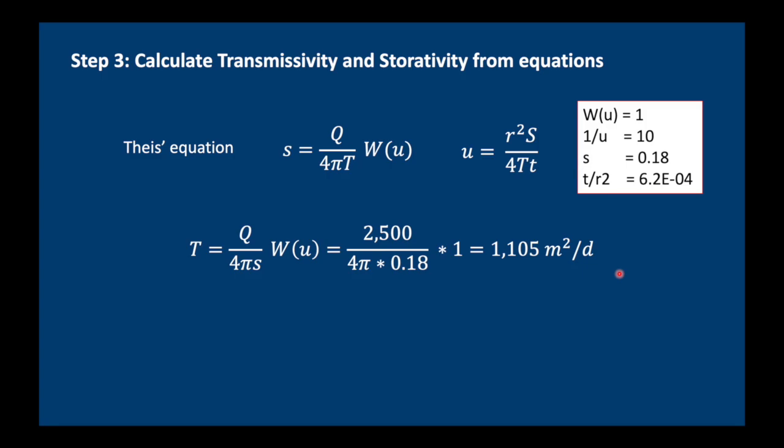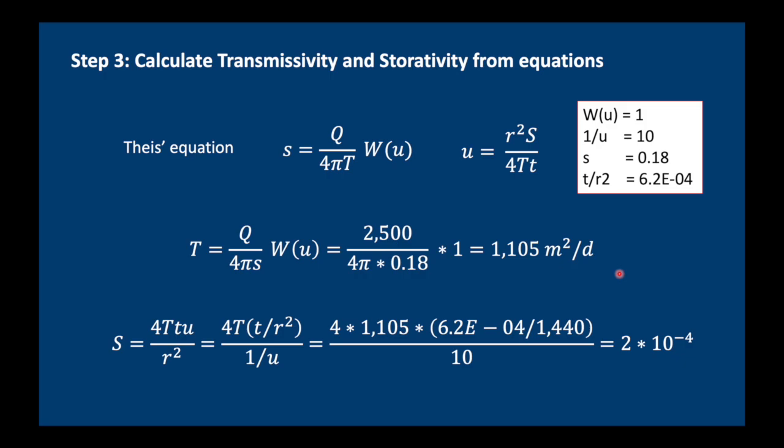Now that we've calculated the transmissivity, we can calculate the storativity because the storativity equation, which is from the equation of u, is 4 times the transmissivity, 1,105 times t over r squared. Now t over r squared is 6.2 times 10 to the minus 4, but we need to divide it by 1,440 because remember that time here is in minutes and of course we have to convert it into days. And everything is then divided by 1 over u which is 10. And we come up with 2 times 10 to the minus 4. Notice that it's always useful to round up storativity to 0 decimal places.